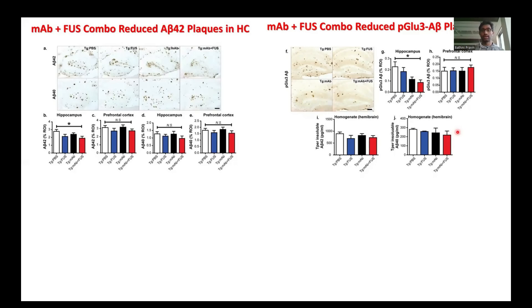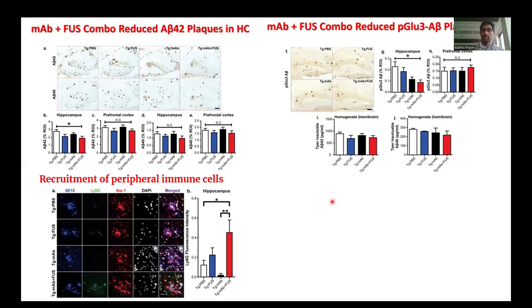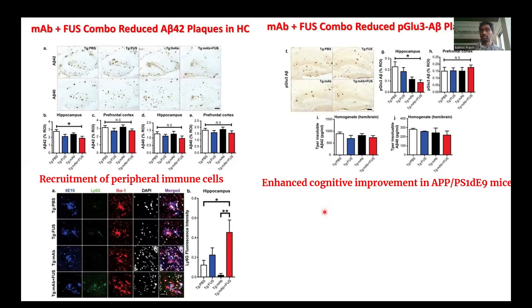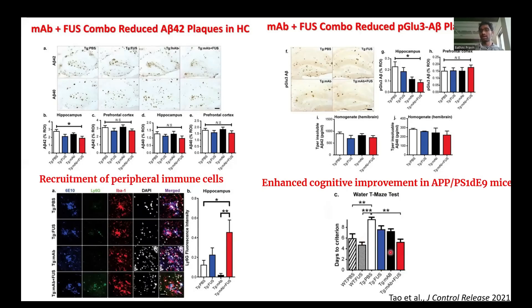We then investigated peripheral infiltration of immune cells after focused ultrasound. The combination therapy led to increased recruitment of peripheral immune cells. Using the marker Ly6G for neutrophils/granulocytes as a peripheral infiltration marker, the combination therapy showed increased Ly6G immunoreactivity. The overall effects resulted in improved cognitive performance in these mice as estimated by the water maze, measured by number of days to criterion to find the target — transgenic mice receiving the combination therapy took less time to identify the target.